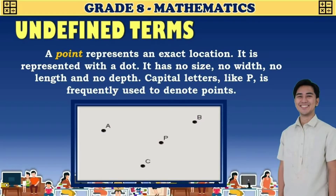The first undefined term in geometry is a point. A point represents an exact location. It is represented with a dot and has no size, no width, no length, and no depth. Capital letters like P are frequently used to denote points. In our illustration, the points shown are point A, point C, point P, and point B.